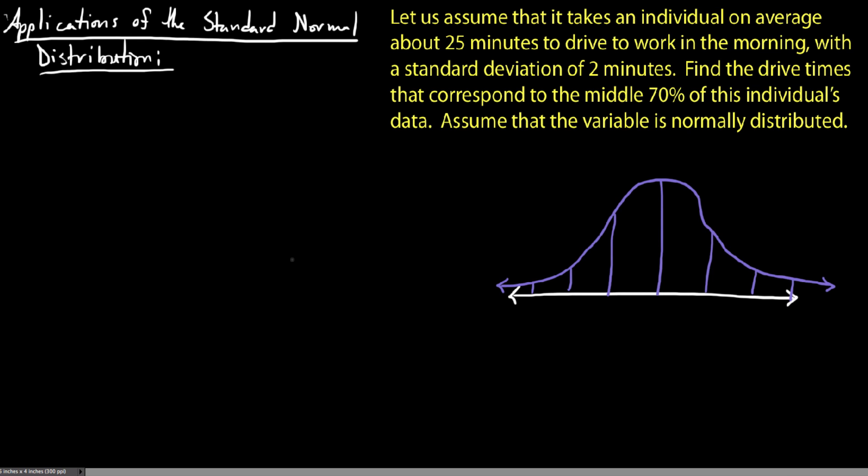In this situation, let's assume that it takes an individual about 25 minutes to drive to work in the morning with a standard deviation of two minutes. Find the drive times that correspond to the middle 70% of this individual's data, and assume that this is normally distributed.